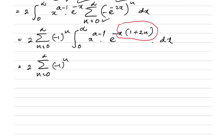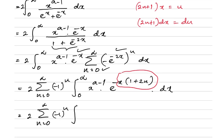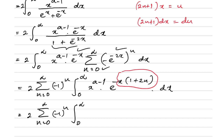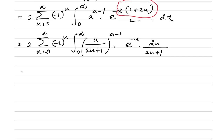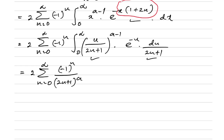Substituting x = u/(2n+1), we get x^(a-1) = (u/(2n+1))^(a-1) and dx = du/(2n+1). After simplifying, the (2n+1) terms combine to give (2n+1)^a in the denominator, leaving the integral from 0 to infinity of u^(a-1) e^(-u) du.